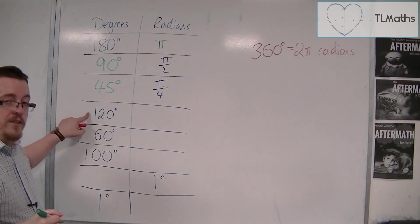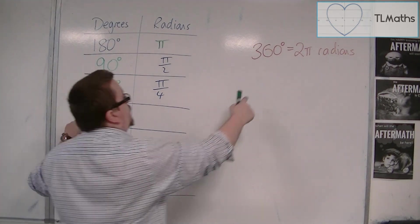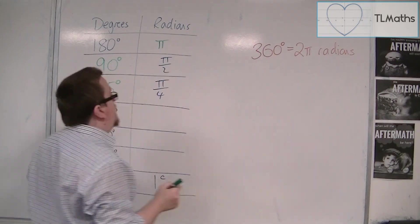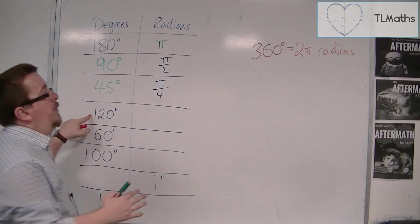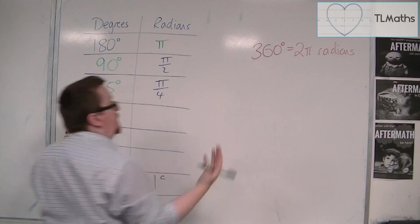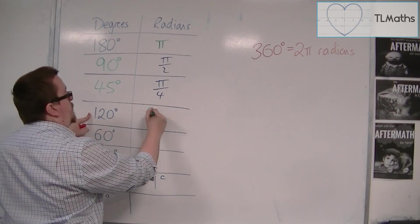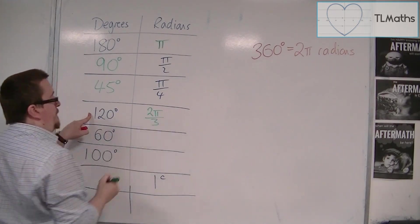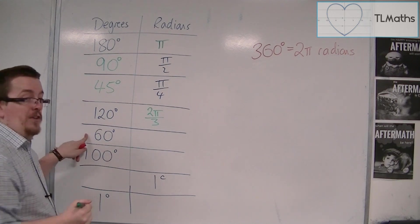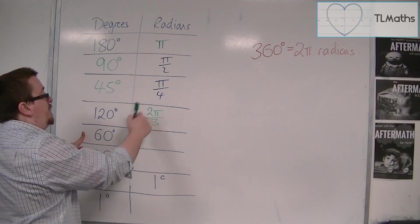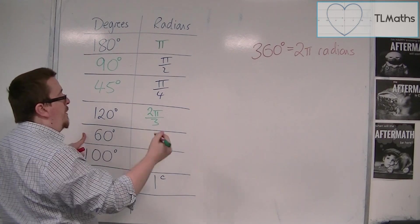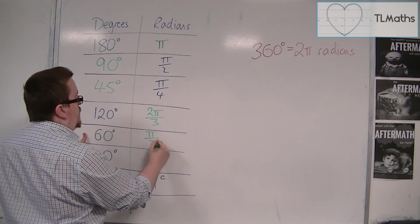Now, 120 degrees is actually 360 divided by 3, and so we would have 2 pi divided by 3, so 2 pi over 3. Now, 60 degrees is half of that, so half of 2 pi over 3 is 1 pi over 3, or just pi over 3.